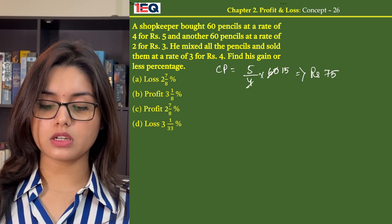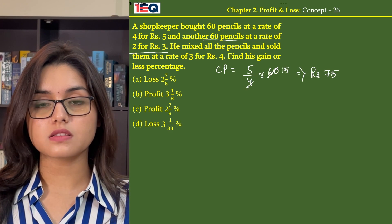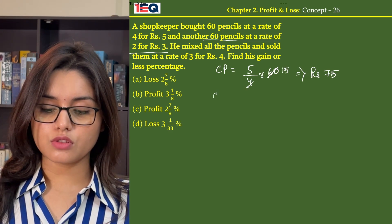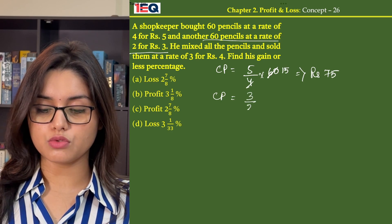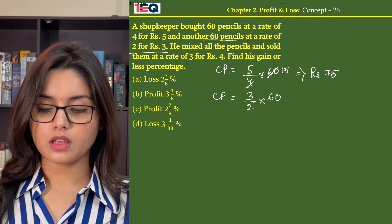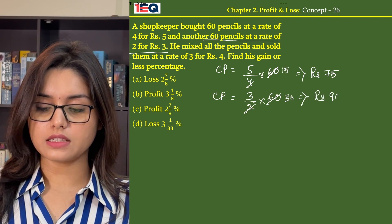Now he bought another 60 pencils at a rate of 2 for Rs 3. That means the cost of one pencil is 3 by 2. So the cost price of the other 60 pencils will be 3 by 2 into 60, that is 3 times 30, which gives us Rs 90.